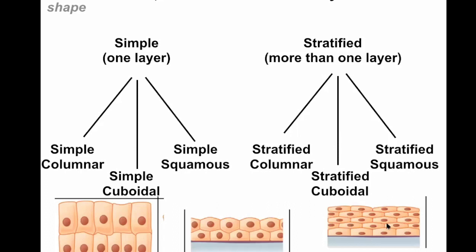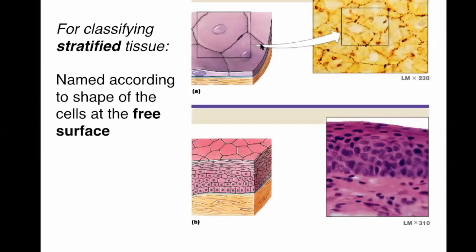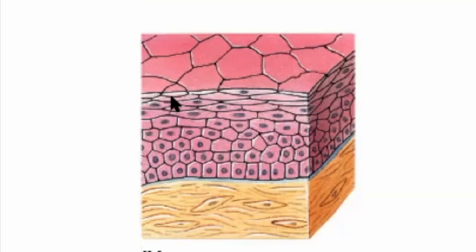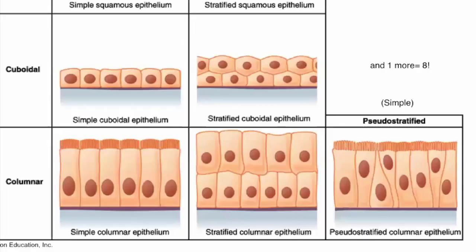For stratified cells, when you're classifying tissue you want to look at the very top layer — the free surface, which would be the outside of your body or the lumen of a cavity. You call the tissue type based on that top layer. So if the top cells are squamous, it's stratified squamous epithelia, even though the cells lower down may look cuboidal. That's just the naming convention.